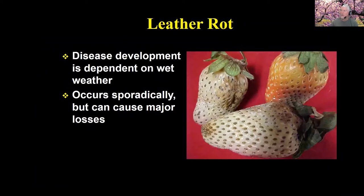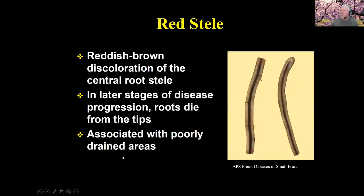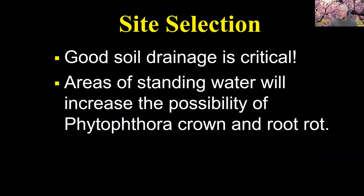Leather rot is generally a leathery type of fruit rot. I've not seen it often in the 20 years I've been in Georgia — it may occur more in other locations. Red stele I've only seen once in all my time in Georgia, so it's very rare for us. Red stele produces a red discoloration in the roots. All of these are associated with poorly drained areas. So site selection and making sure your drainage is good is critical for Phytophthora management. If you have any areas of standing water, you need to install drain tile or simply not plant in that area.